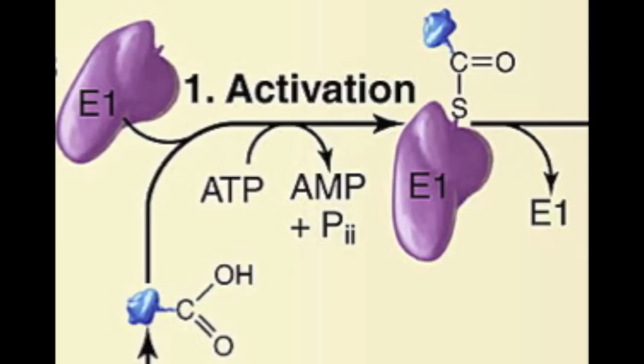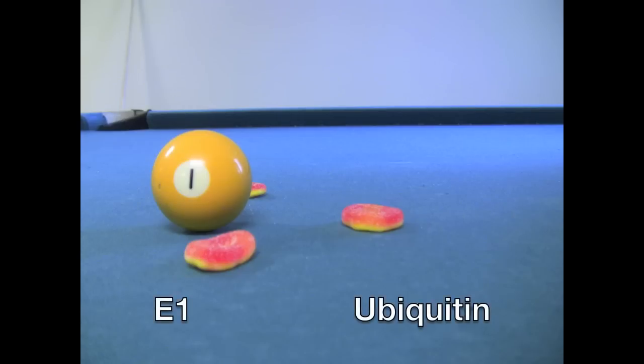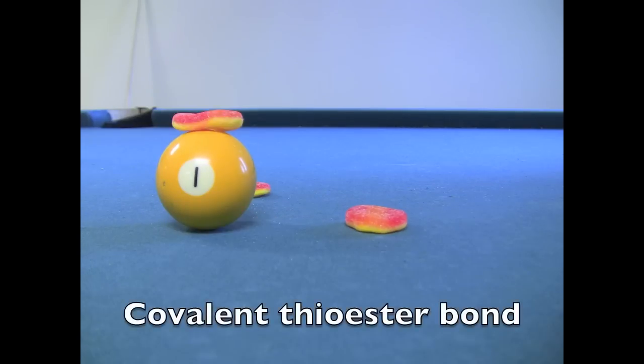In step one, ubiquitin is activated. A protein called E1, also known as the ubiquitin activating enzyme, catalyzes the formation of a covalent thioester bond between itself and ubiquitin. This protein utilizes ATP hydrolysis to activate the ubiquitin molecule.